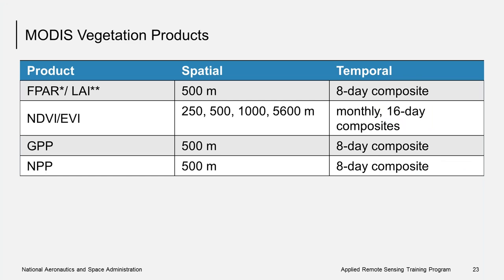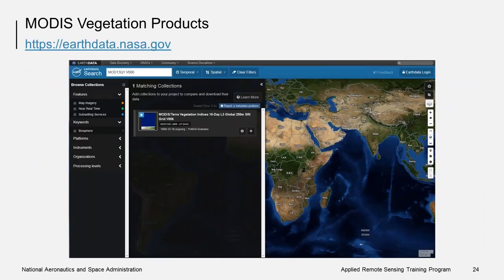These are the MODIS vegetation products available related to productivity. The FPAR, GPP, and NPP products are available at 500 meter spatial resolution at 8-day composites, and the vegetation indices are available at various spatial and temporal resolutions. This is the EarthData web portal where you can access and download the MODIS imagery. Amber gave you a demonstration of this web portal at the end of yesterday's session.